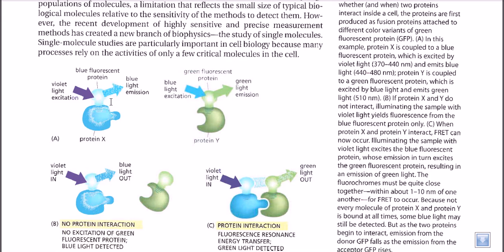Let us take two proteins: Protein X and Protein Y. Their fluorescent properties are a little different. If we excite Protein X with violet light, it will emit blue light. If we excite Protein Y with blue light, it will emit green light as fluorescence.